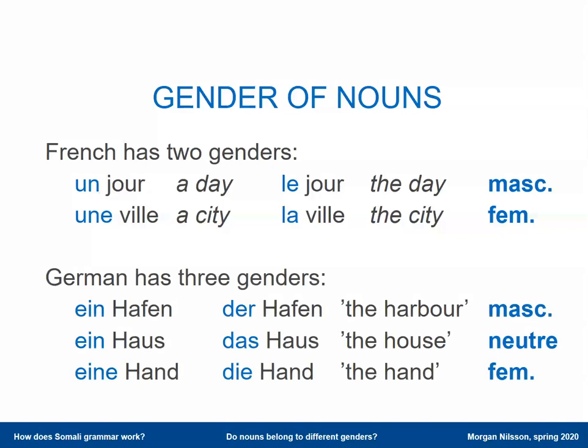German has three genders, like Slovenian. In German, you have to look at the definite article in order to know which gender the noun belongs to, because two of the genders take the same indefinite article. 'Ein' can be both masculine and neuter, so you have to look at 'der' or 'das' in order to be sure if it's masculine or neuter.